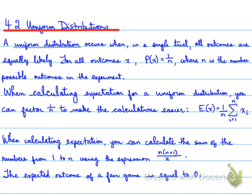4.2 Uniform Distributions. Uniform distribution occurs when in a single trial, all outcomes are equally likely.